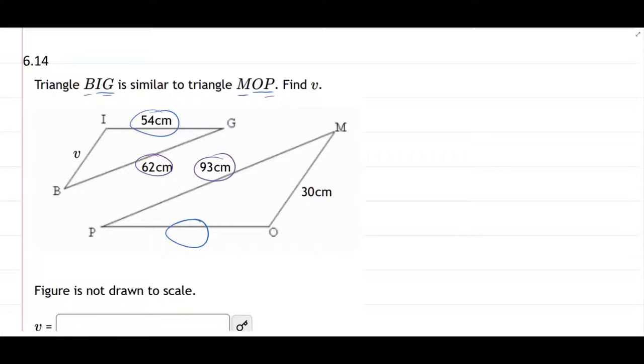Last up, we'll go with green. Green will be the last side, which is the B-I, which corresponds to the M-O, which is 30.